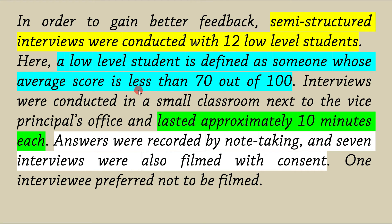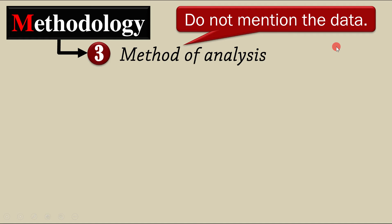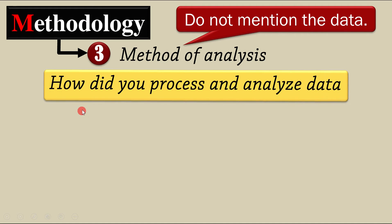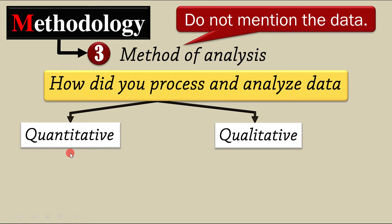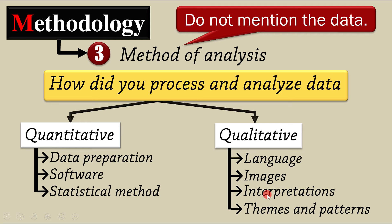If you are ready, let's go to the next step. The third step will be method of analysis. Do not mention the data here. Just tell the reader how did you process and analyze the data. If your data are quantitative, please mention data preparation, software, and statistical method. If they are qualitative ones, please mention language, images, interpretations, and themes and patterns.